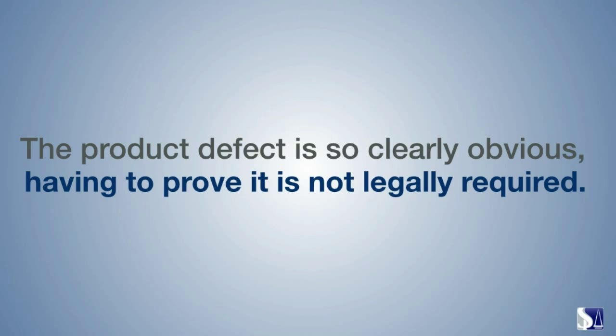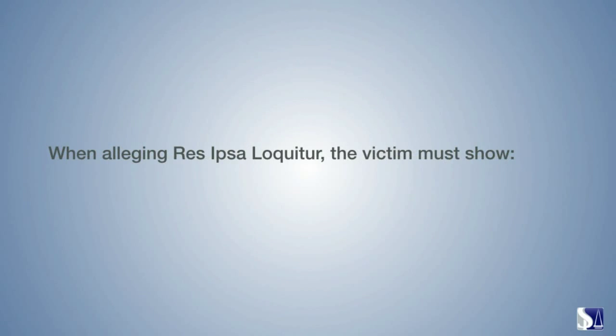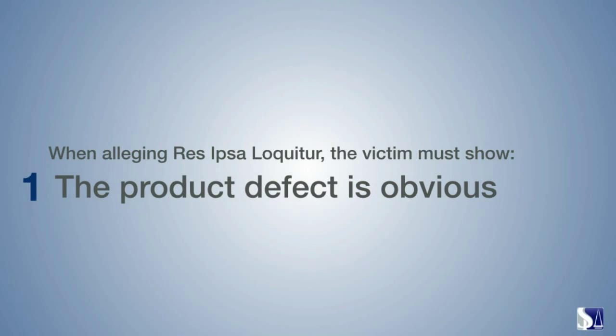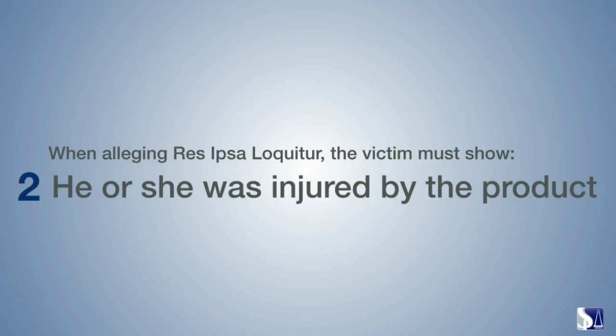When alleging Res Ipsa Loquitur, the victim must show: one, the product defect is obvious, and two, he or she was injured by the product. In their defense, a manufacturer can still legally respond by saying the victim misused the product or knew of its danger and used it anyway.